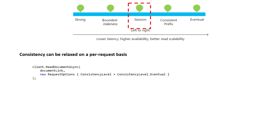Consistency can always be relaxed on a per-request basis. Let's say I've configured an account that uses bounded staleness, which performs quorum reads to maintain consistency guarantees. However, for a specific request where I do not have as strong a consistency requirement and instead just want the lowest latency and highest throughput possible, I can set the consistency level to a lower consistency level in the request options, making sure that read is as fast as possible.